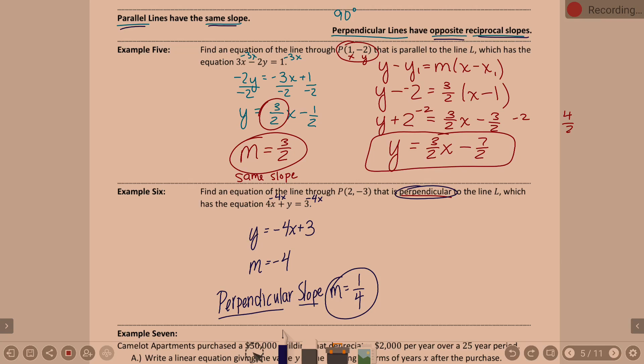So we're going to use the slope one-fourth. That's perpendicular. We're going to use the slope 1/4 and the point they gave us of (2, -3), and we're going to write an equation.